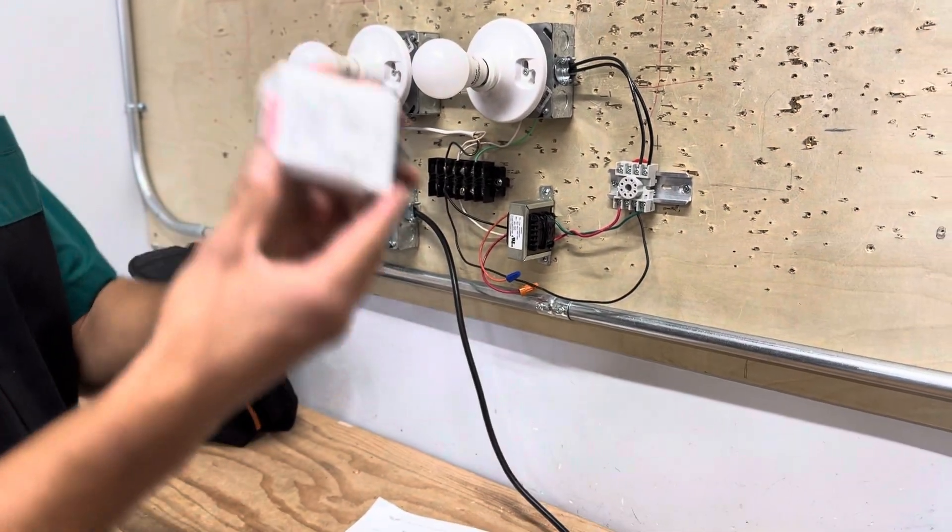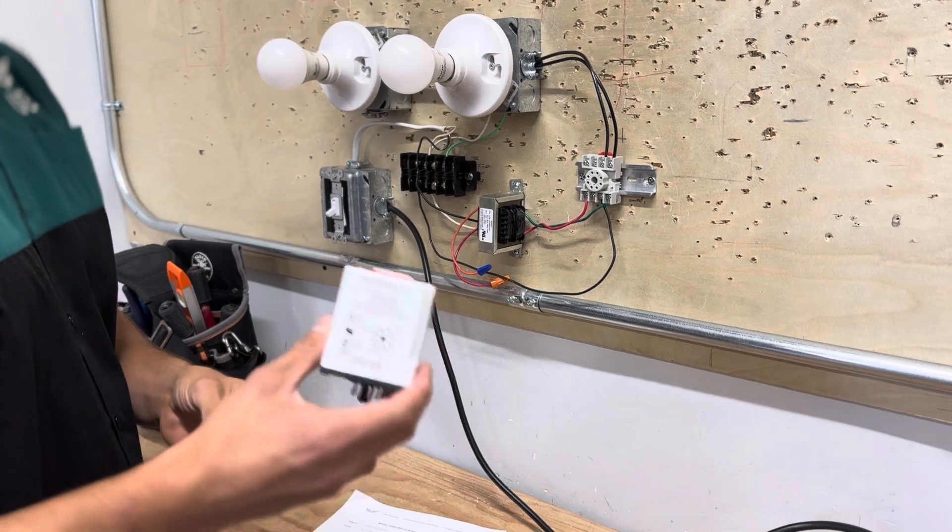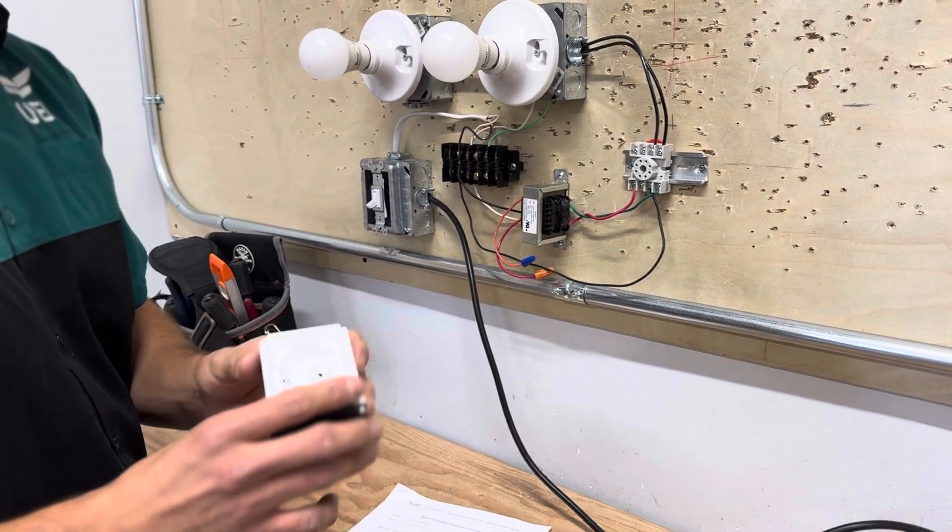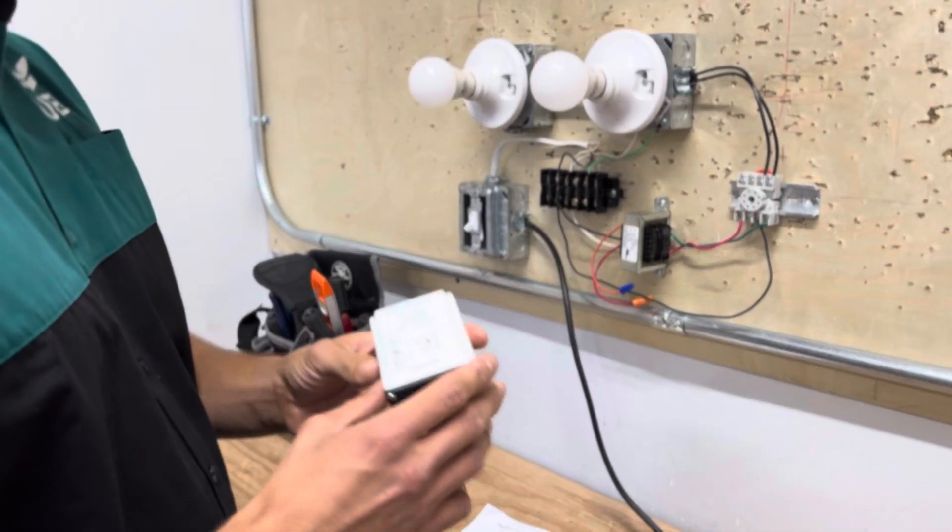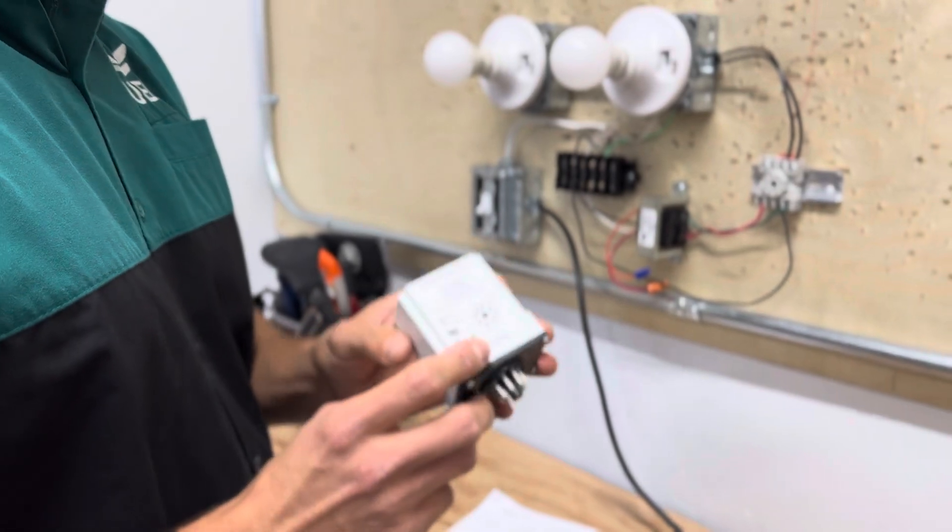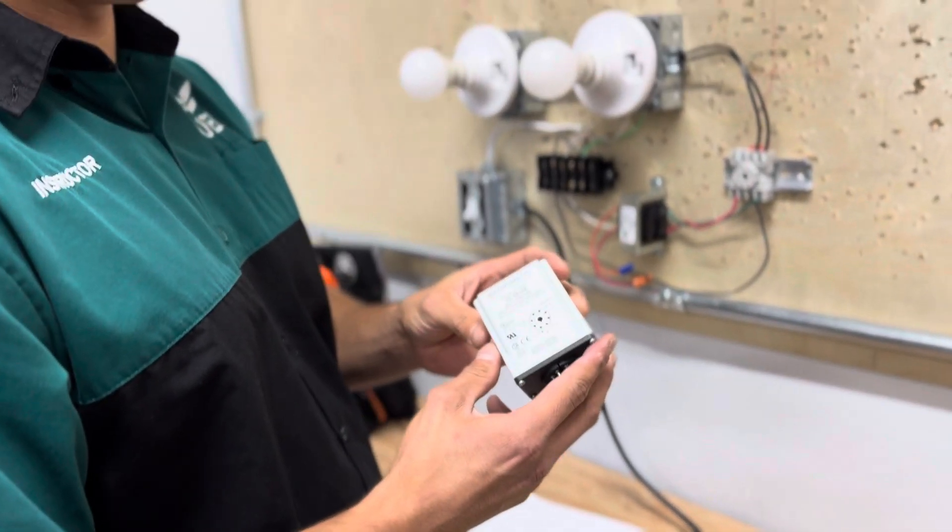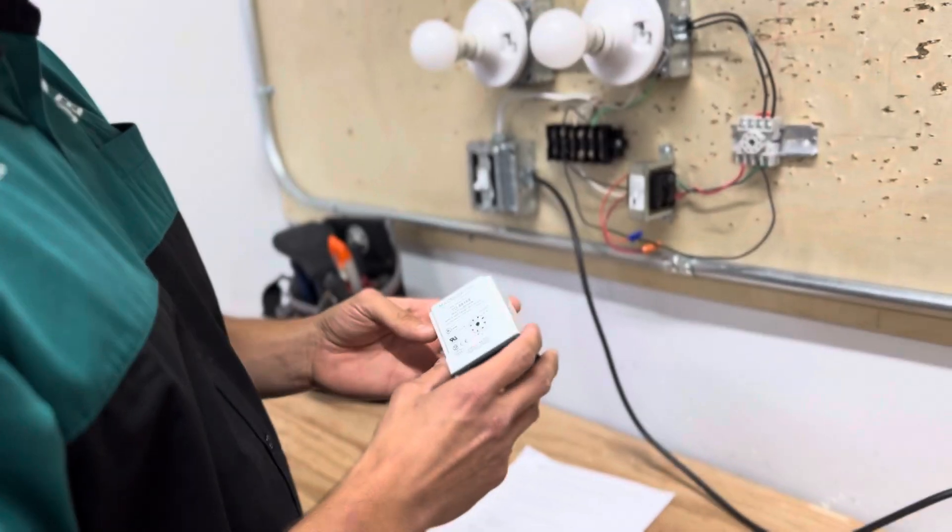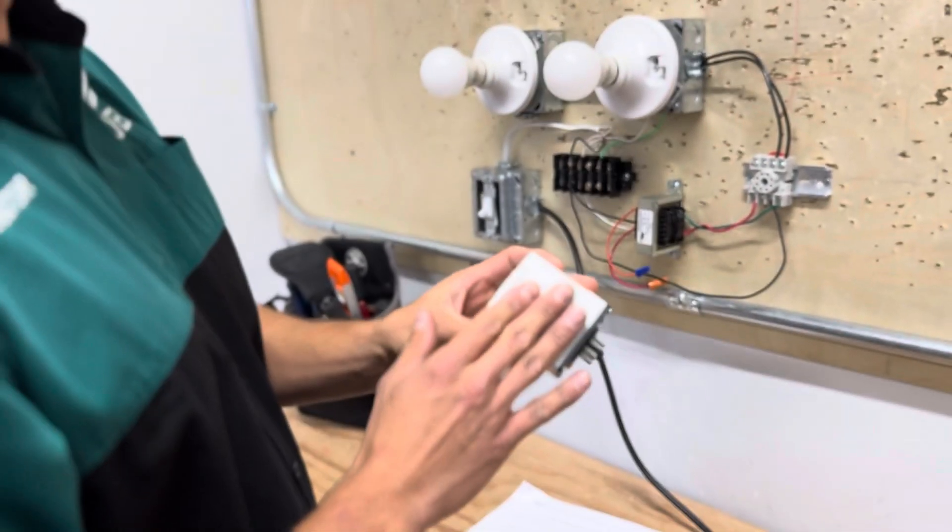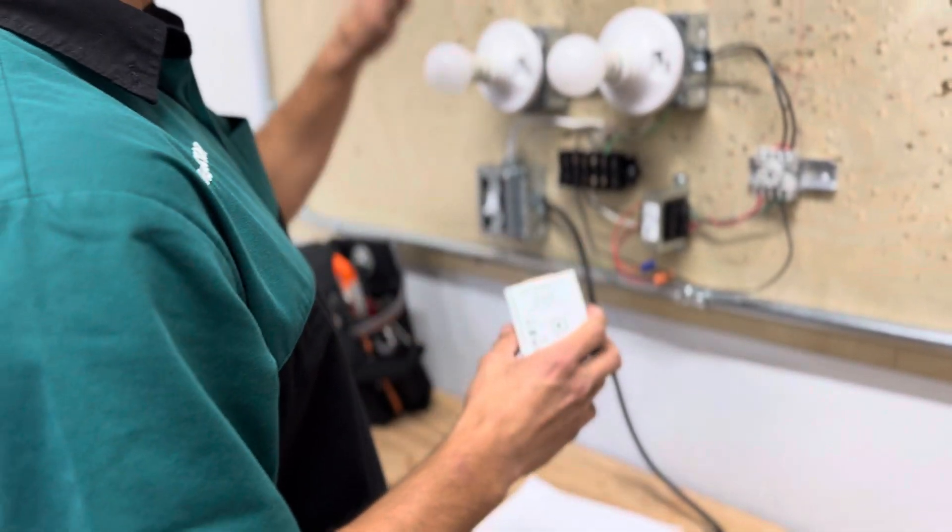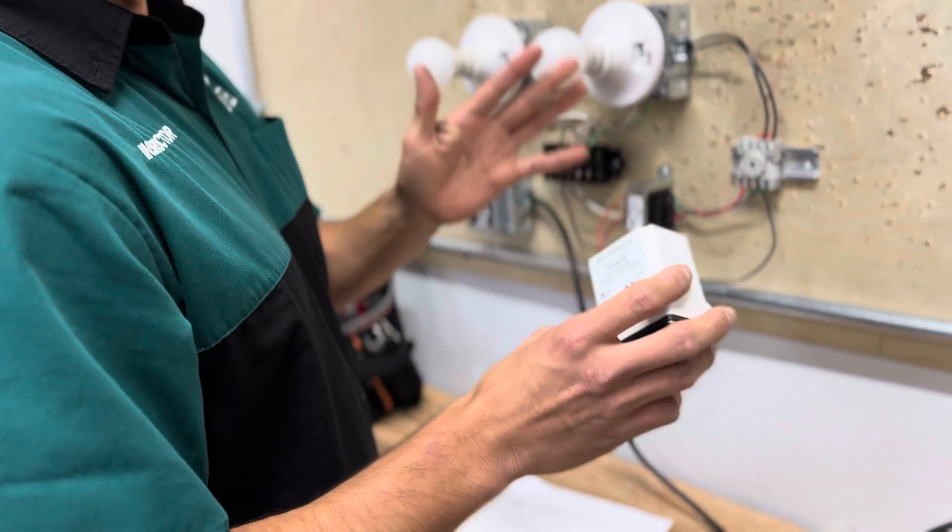So this is a solid-state relay. This is very different than your traditional electromechanical relay. This uses solid-state devices such as diode, light-emitting diode, and a triac. The cool thing about this device is that we can control turning on loads at different times.